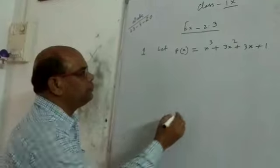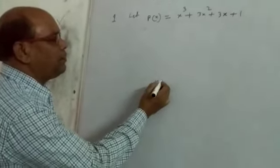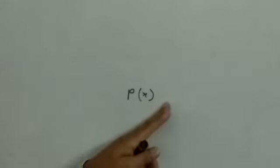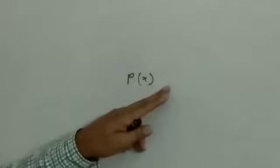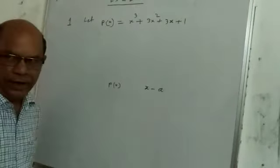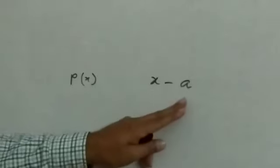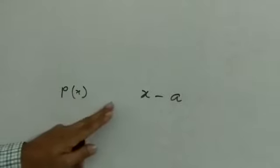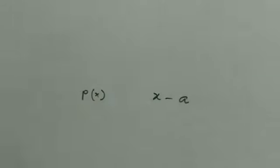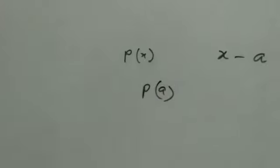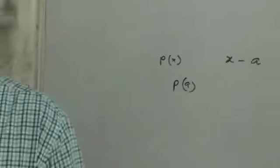Let P(x) be a polynomial whose degree is greater than or equal to 1. If this polynomial is divided by a linear polynomial x minus a, where a is any real number, and if we divide P(x) by the linear polynomial x minus a, then the remainder is P(a). In last class I have explained you with examples. I think it is clear.